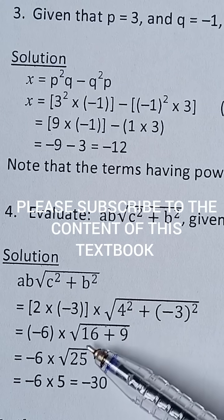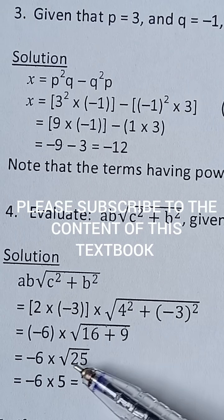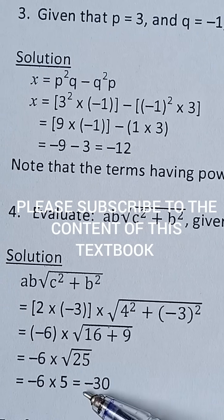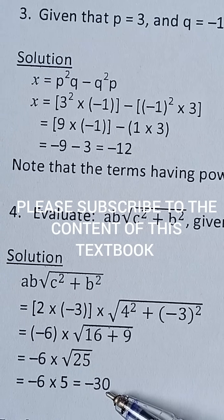That gives you 16 plus 9 as 25. So the square root of 25 is 5, then multiplied by the negative 6 that we have, that gives you negative 30.